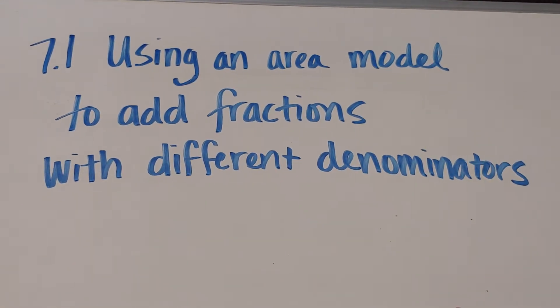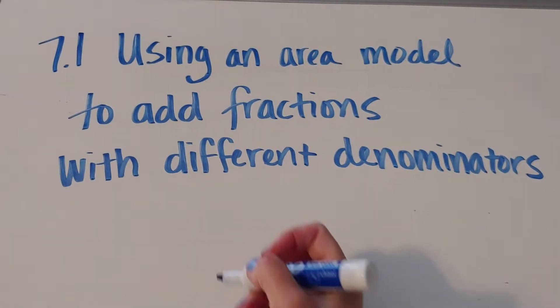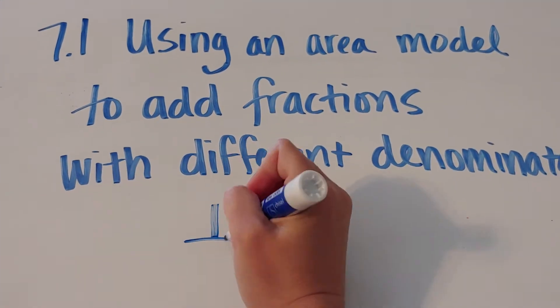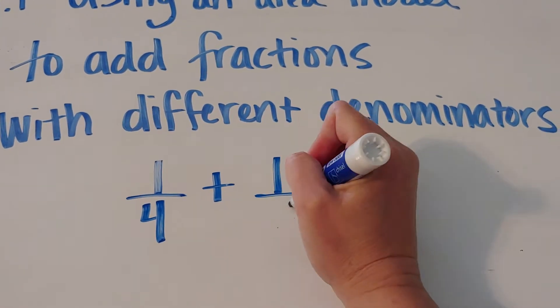Today we're going to look at how to use an area model to add fractions with different denominators. So what we're interested in doing is adding something like one-fourth plus one-fifth.